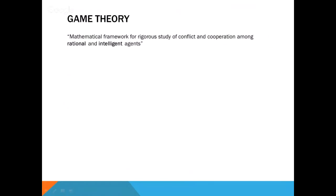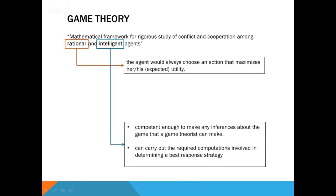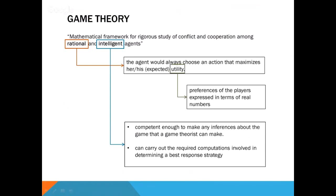So to start off, what is game theory? It is a mathematical framework for rigorous study of conflict and cooperation among rational and intelligent agents. A rational agent would always choose an action that maximizes his or her expected utility. Utility, in some sense, can be thought of as a payoff — it is the preferences of the players expressed in terms of real numbers.